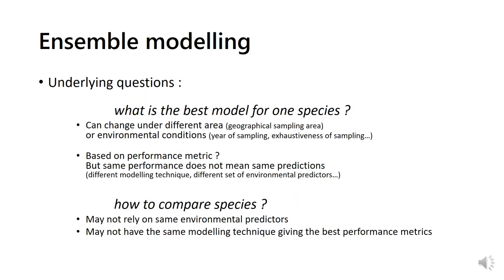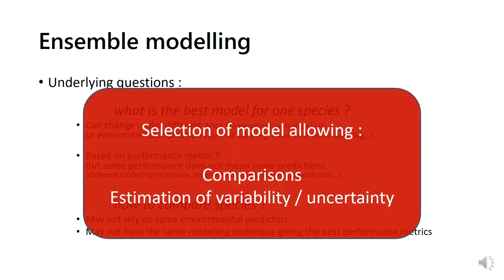Two broad underlying questions arise from this. What is then the best model for one particular species? As results may change under different geographical or environmental conditions resulting from different sampling. Also, some models can be more sensitive than others to sampling bias. As for the performance metric, two different models can show the same value but imply different results. And this becomes even more complex when modeling and trying to compare several species. As one set of environmental variables can be adequate for one species but not for another, and best performance values may be obtained with different modeling techniques.